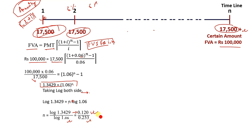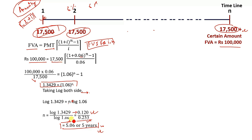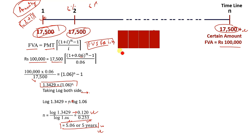So we have 5.06 years. Exactly 5 years ago, we have 7.05 years. We have 5.06 years. In the last month, we have the answer — 7.05 years.